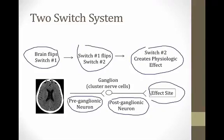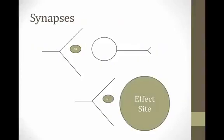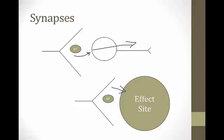The place where the two nerves meet is called a ganglion — a cluster of nerve cells, with several in the body related to the autonomic nervous system. The two nerves communicate through neurotransmitters at the synapse, a space where one nerve ends and another starts. The first nerve releases a neurotransmitter into the synapse, which crosses it and triggers the second neuron to fire, which then releases a neurotransmitter onto the effect site to cause the desired action.